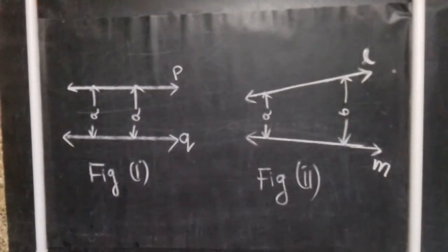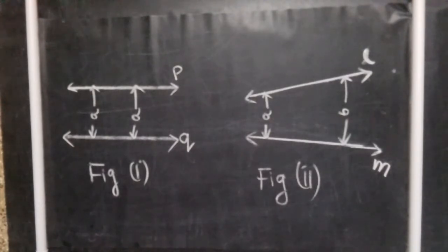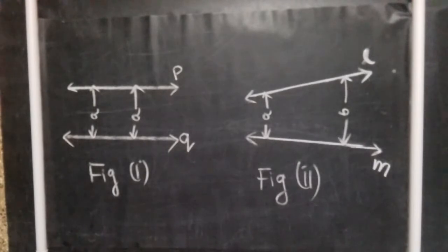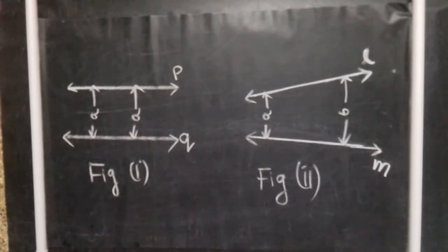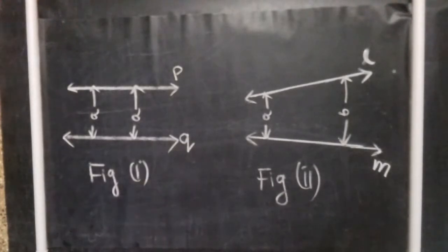Parallel lines definition: Two or more lines are said to be parallel to each other if they are in the same plane, they do not intersect when produced on either side, and the distance between them remains the same.